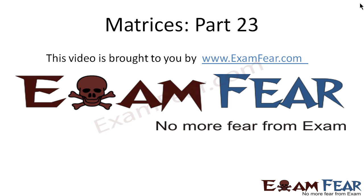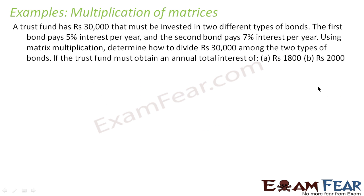This video on matrices part 23 is brought to you by examfear.com. A trust fund has 30,000 rupees that must be invested in two types of bond. The first bond pays 5% per year and the second one pays 7% per year. Using matrix multiplication, we have to determine how to divide 30,000, where the total interest obtained is either 1,800 rupees or 2,000 rupees.